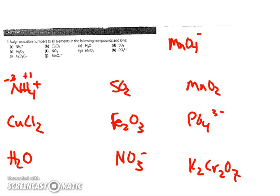The second one, copper chloride: copper is a transition metal, so chlorine gets preference at minus one. That gives us a total minus two charge, so copper is going to have to be plus two in this case.